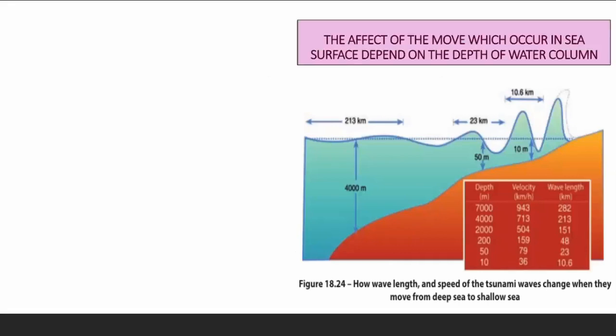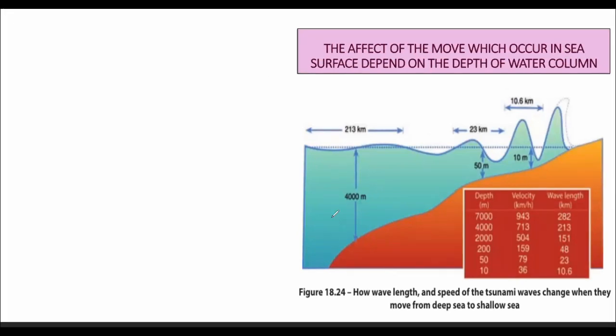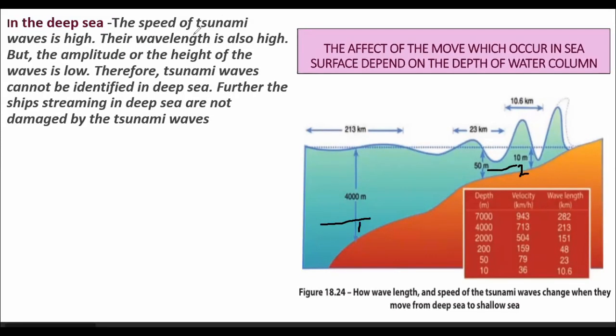The movement of the water wave depends on the depth of the water column. Looking at figure 18.24, the wavelength and the speed of tsunami waves change according to the depth of the water column. Region one is the deep sea region and region two is the shallow sea region.